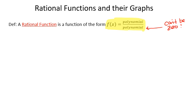The graphs of rational functions have a little bit more variability than polynomials. With polynomials, every graph had the same general shape — they all either looked like some slightly more complicated version of x squared, where both ends point in the same direction, or x cubed, where one side points up and the other side points down.